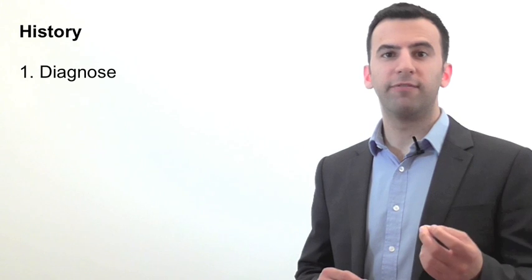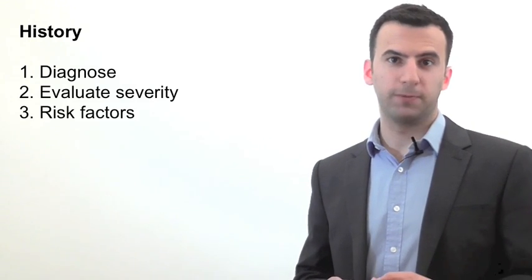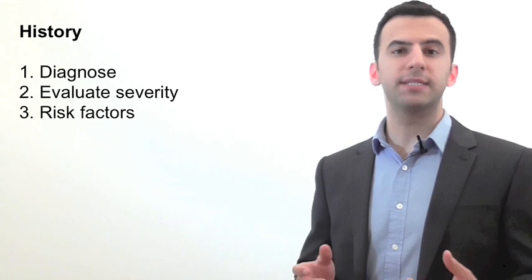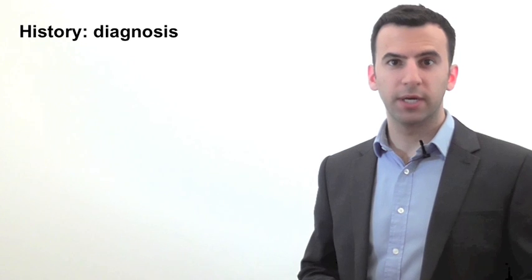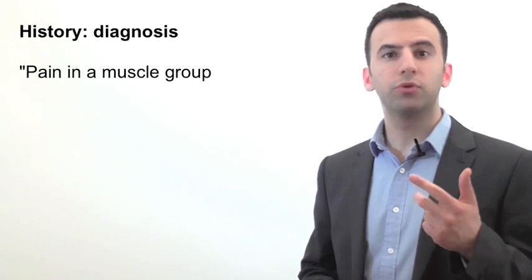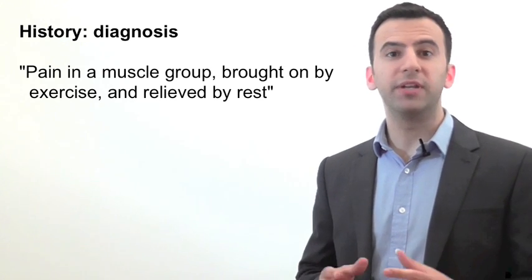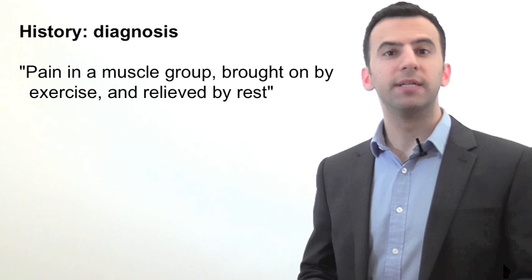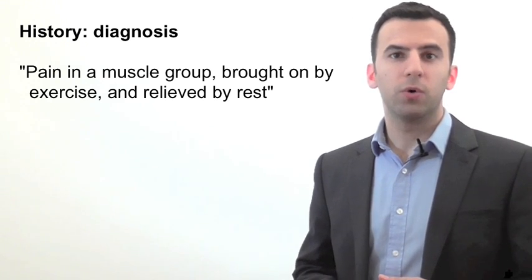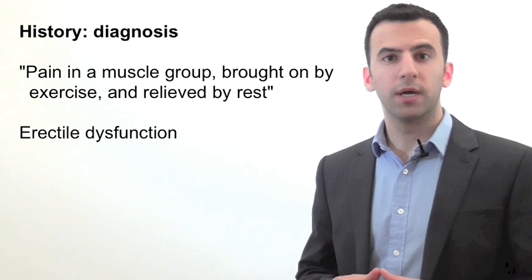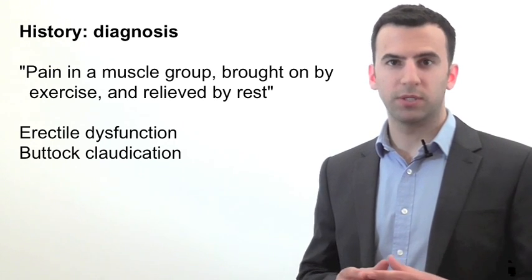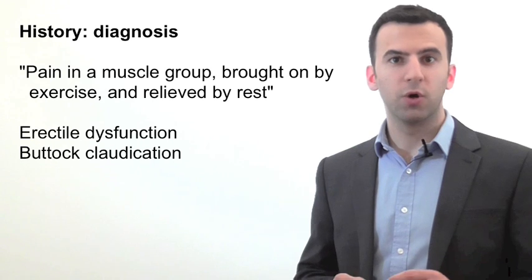When taking a history from someone suspected of having lower limb arterial disease, you need to ask questions that make the diagnosis, evaluate the severity and also the risk profile. Let's start with the typical history of intermittent claudication. Intermittent claudication is defined by four key parts. It is pain, in a muscle group, brought on by exercise and relieved by rest. So if your patient points to his or her calf muscle, then you need to ask what brings on the pain and what relieves it to see if it fits the definition. Also, ask about erectile dysfunction in males and also buttock claudication. These two symptoms may be present in aorto-iliac disease, which is the Leriche syndrome.